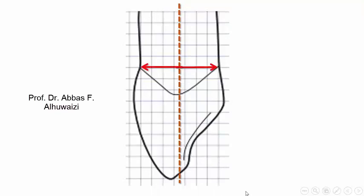The buccolingual dimension or buccopalatal dimension at the cervical area is 7 mm. Therefore, it is 3.5 mm from the bisecting line to the buccal point and 3.5 mm from the bisecting line to the palatal point.